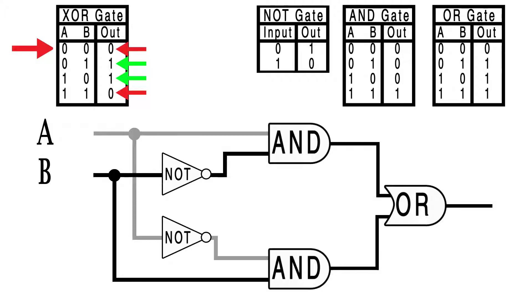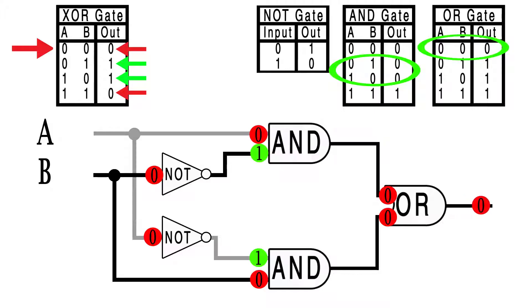If our A and B inputs are both 0, then we end up with a 0 here and a 1 here, while this becomes a 0 and a 1. Neither of the AND gates are satisfied, so they both output a 0. And as a result, the OR gate is fed two 0s, it's not satisfied, outputs a 0. Okay, well, good so far.